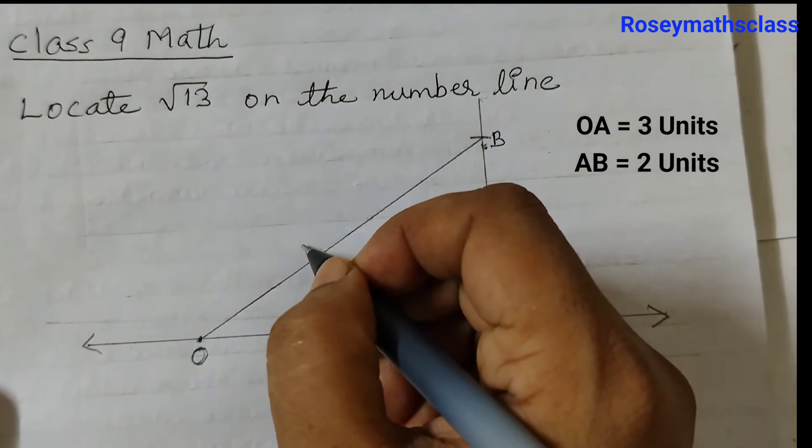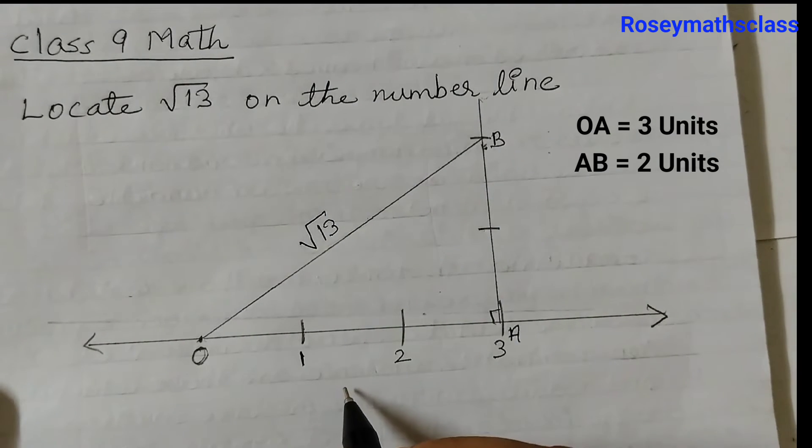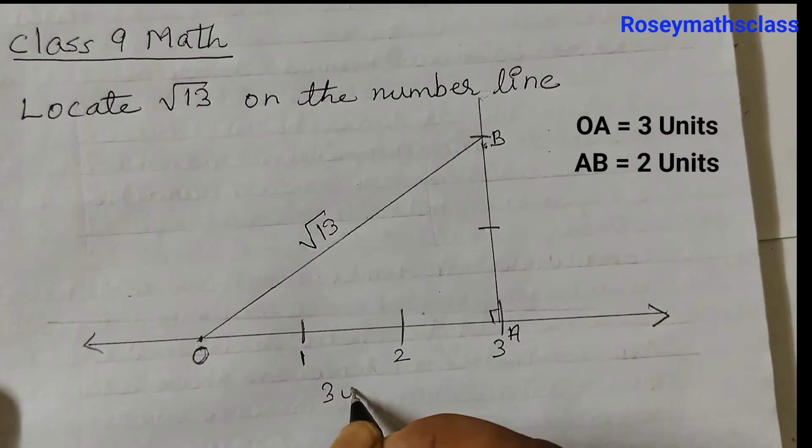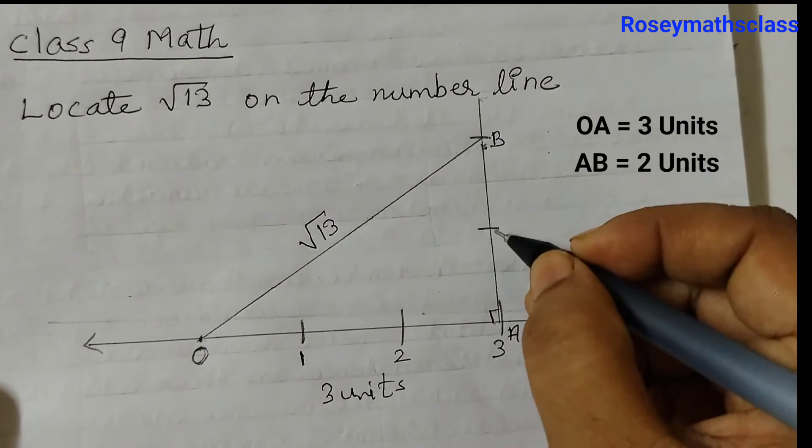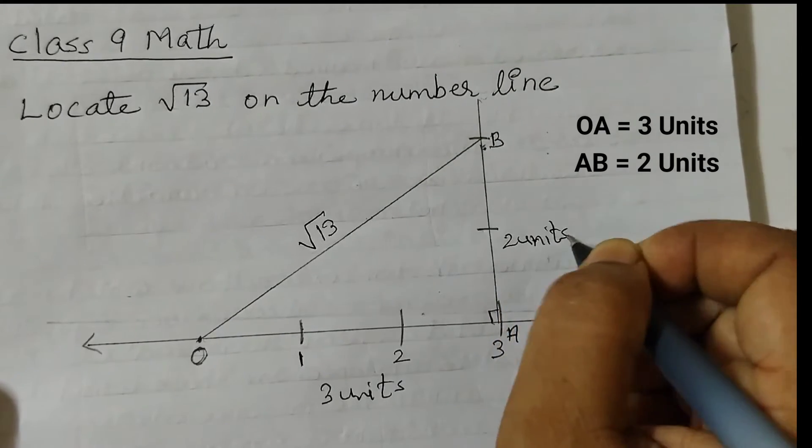This length OB is square root of 13. How do we know this? OA is 3 units, and AB is 2 units.